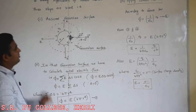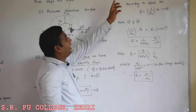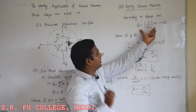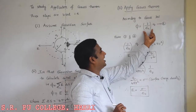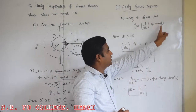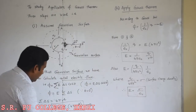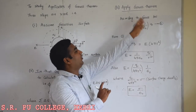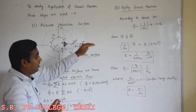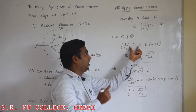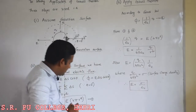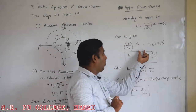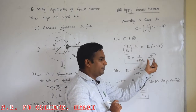The third important step to study the application of Gauss theorem is to apply Gauss law. According to Gauss law, total electric flux enclosed in the surface equals 1 by epsilon naught times net charge enclosed — call this equation 2. Comparing equations 1 and 2, we get 1 by epsilon naught into Q equals E into 4 pi R square. Rearranging, E equals 1 divided by 4 pi epsilon naught into Q divided by R square.